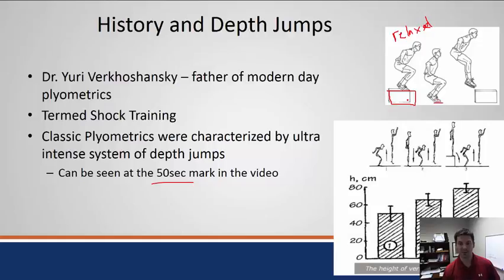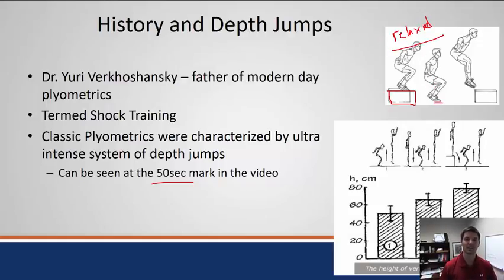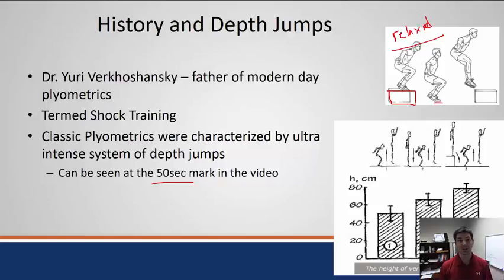One thing to point out about the depth jump — and this translates to most plyometrics — is that when you fall you need to minimize shock absorption. In this example, you don't want to flex at the knees and minimize hip flexion, which would absorb the shock. Instead, you want a high shock on the system so that you get that stored loading phase.